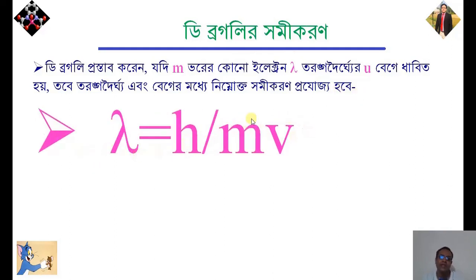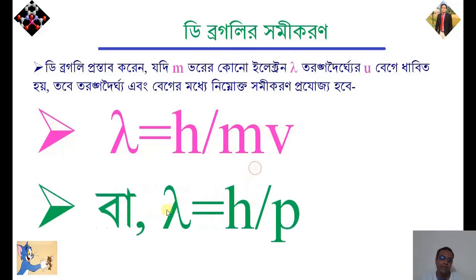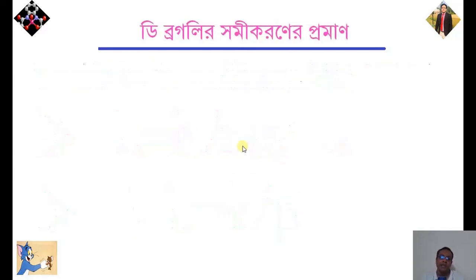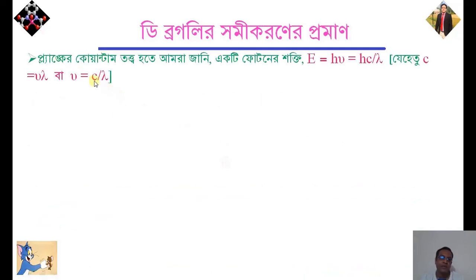Therefore, we can see that lambda I is equal to A into mp. N is equal to C by lambda, C is equal to N, N equals C by lambda.